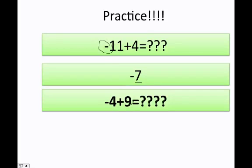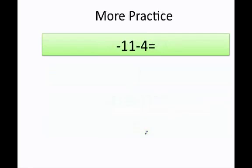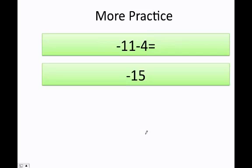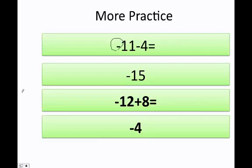What about here? I hope you tell me that you need to subtract and your bully is 9, therefore negative 4 plus 9 equals 5. Negative 11 minus 4 — remember I need to add, and the bully is negative 11. What about negative 12 plus 8? I hope you say negative 4.